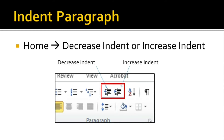Indentation determines the distance of the paragraph either from the left or the right of the margin. You can either decrease or increase the indent by going to the Home tab, and you can increase or decrease the indent in the Paragraph group. This icon is for decreasing the indent and this one is for increasing the indent.